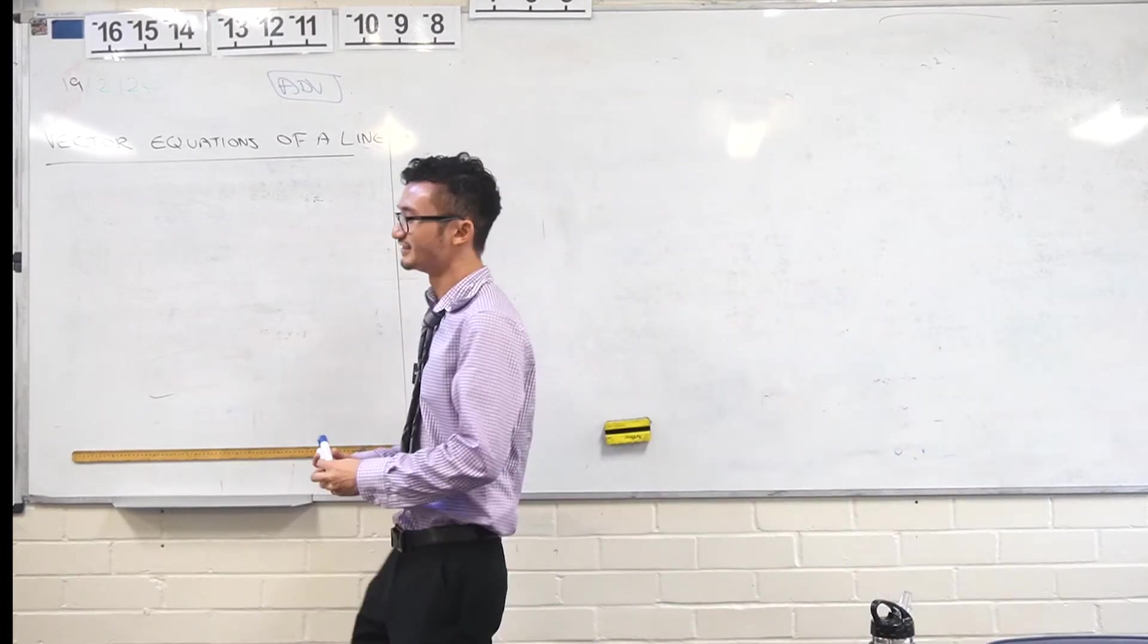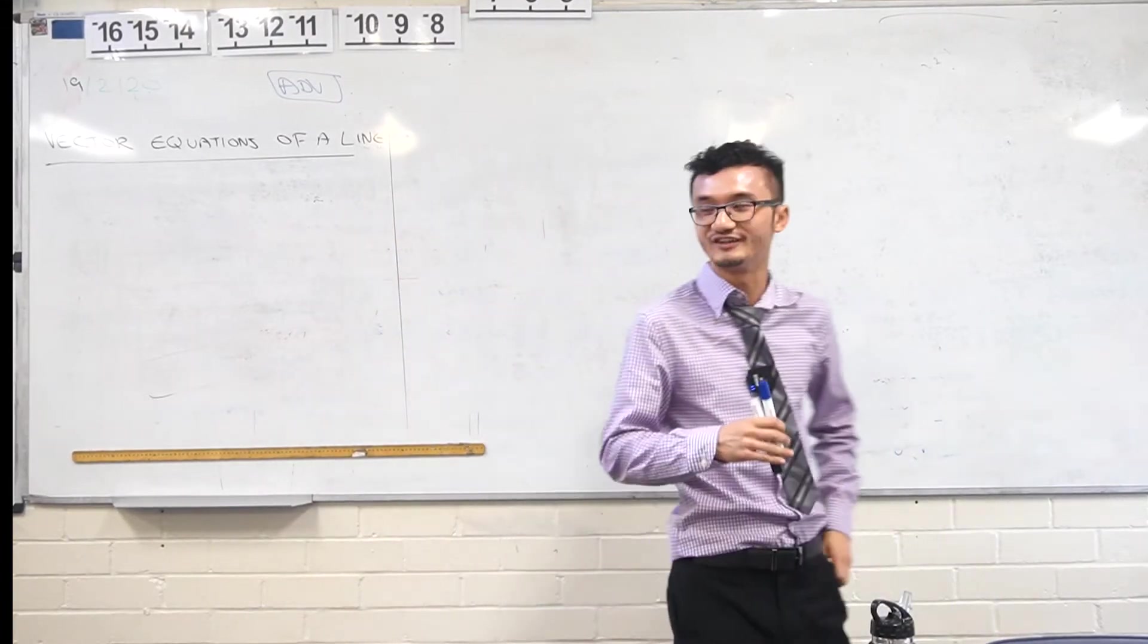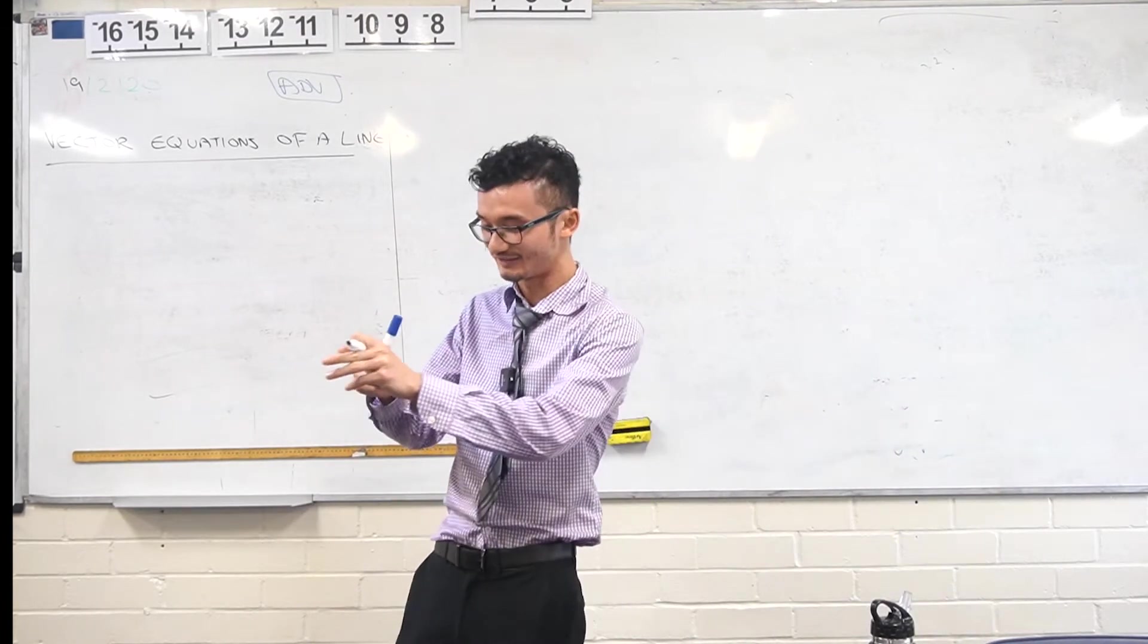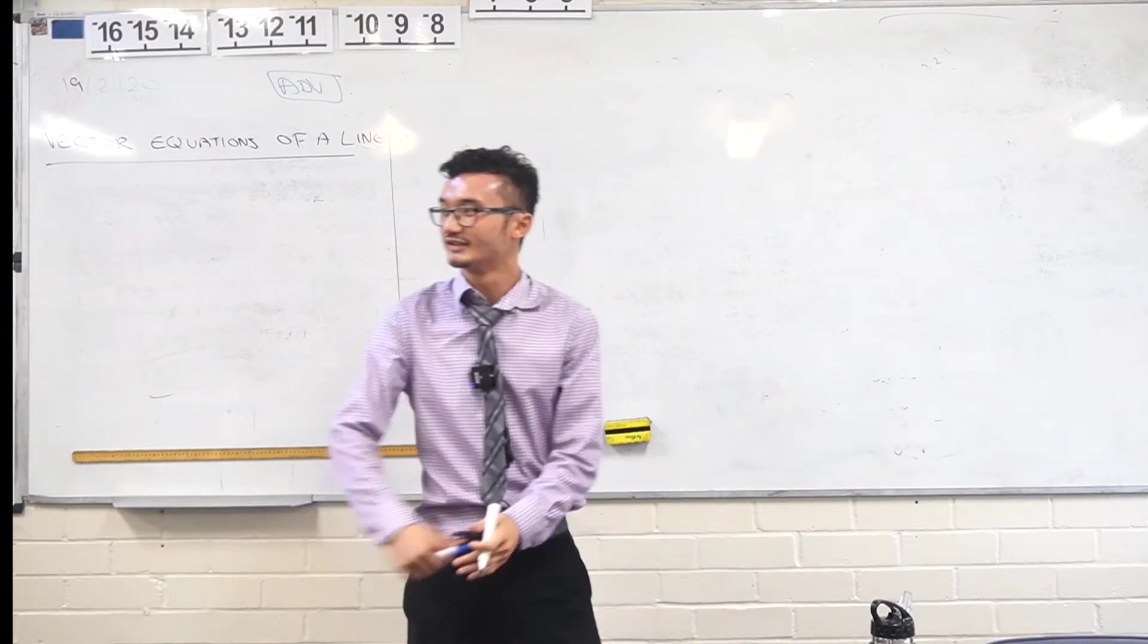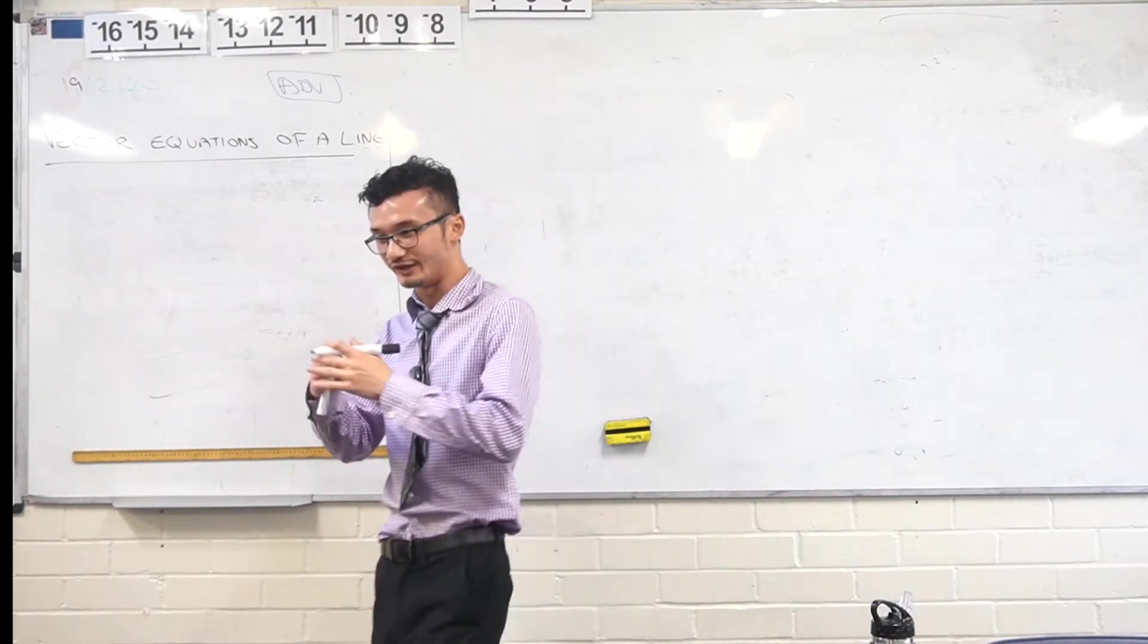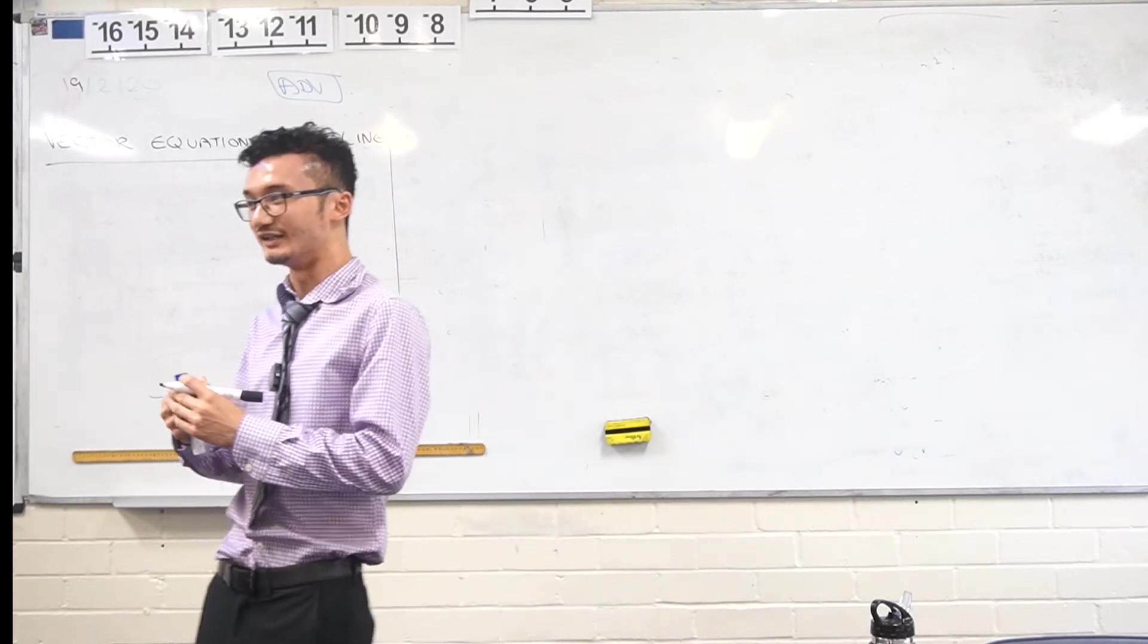All right, vector equations of a line. How is our general form for that written from last lesson? Do you remember? Yeah, let's have a check. So like the same idea, in 2D we needed a point and a gradient. In 3D, what did we need?